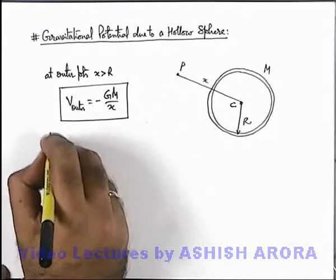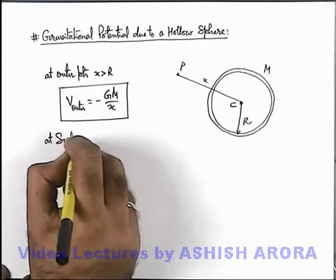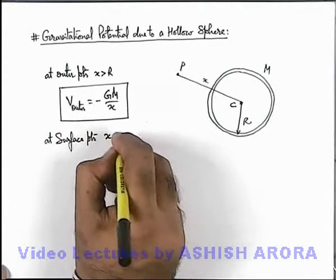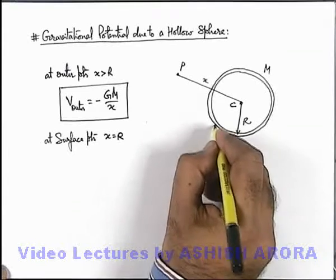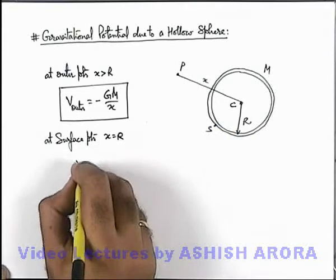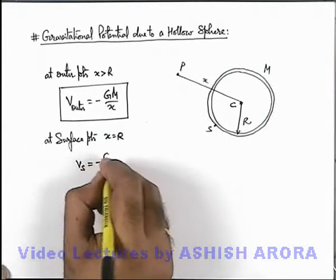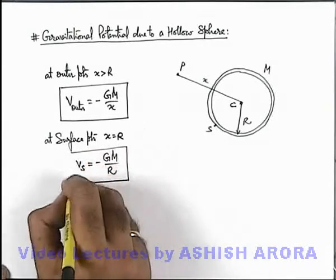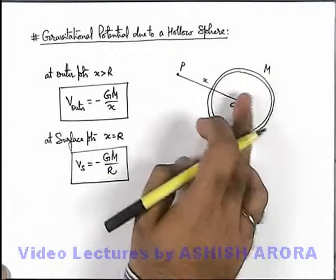Similarly if we talk at surface points, for surface points x is equal to R, and on a surface if there is a point S then V at point S can be written as minus GM/R, as for surface points also we can consider whole mass is concentrated at the center.